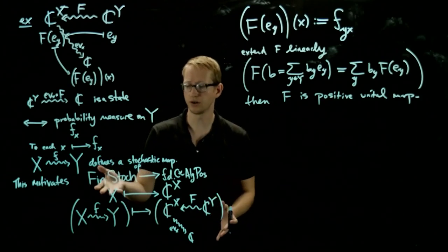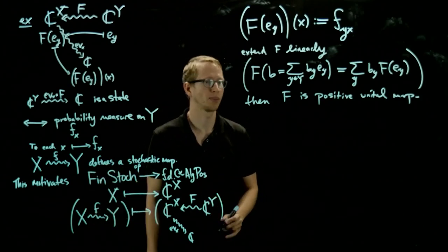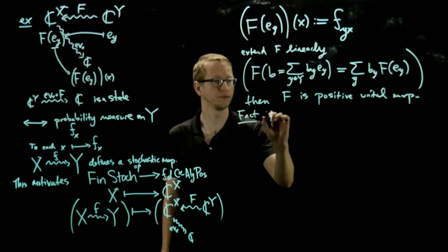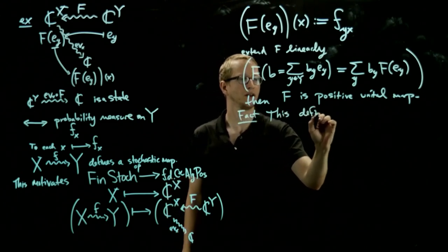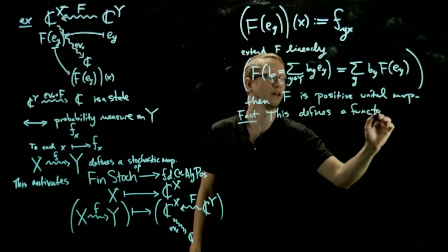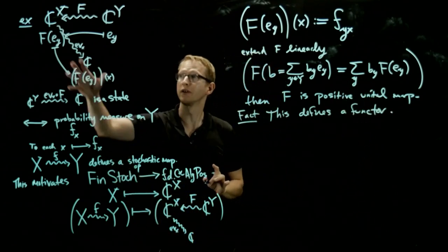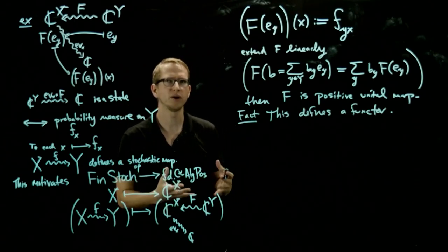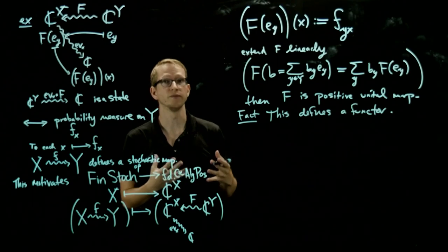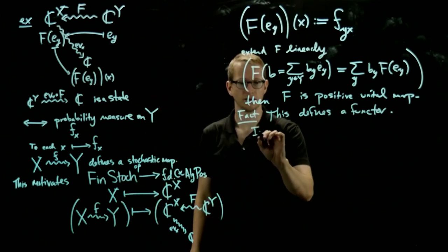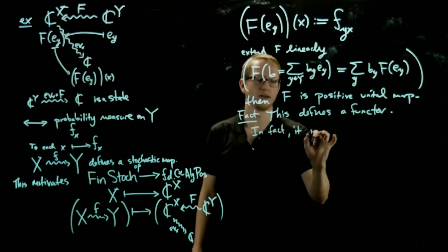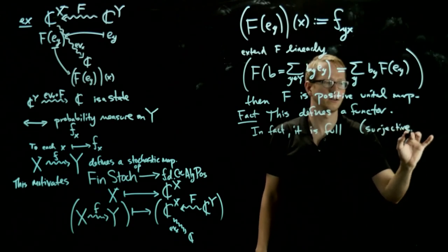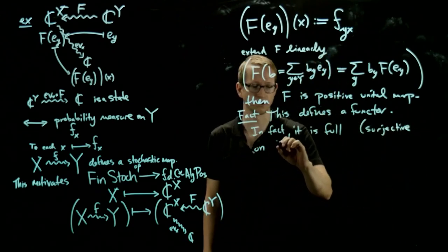So now we've defined a functor on the objects and the morphisms. It's a fact that this defines a functor. But more is actually true: the construction we gave here says that this functor is surjective on morphisms — we say the functor is full in that case. Full means surjective on hom classes or hom sets.